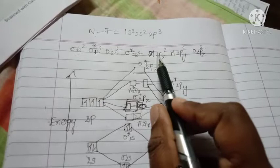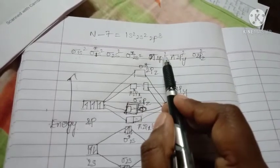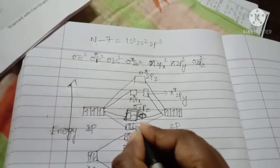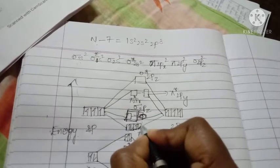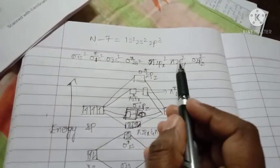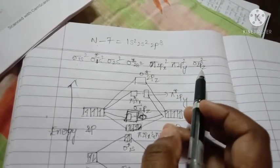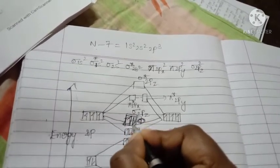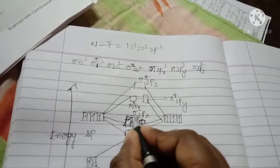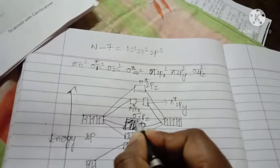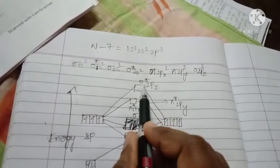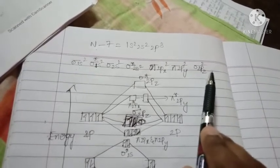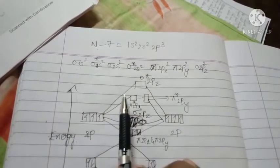Pi 2px has 2 electrons and pi 2py also has 2 electrons, so each is filled with 2 electrons. Next is sigma 2pz², which has 2 electrons, so fill 2 electrons there. The electronic configuration ends at sigma 2pz — there is no electron present in sigma star and pi star. That is why pi star and sigma star are vacant. This is the energy level diagram for nitrogen molecule.